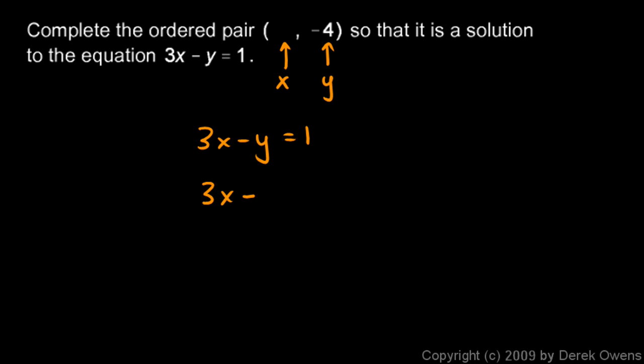3x minus negative 4 equals 1, and that's the same as saying 3x plus 4 equals 1. Now we need to try to find a value for x here that satisfies this equation.